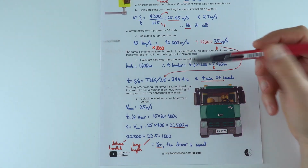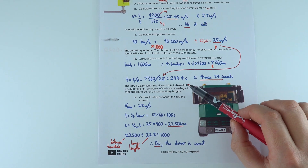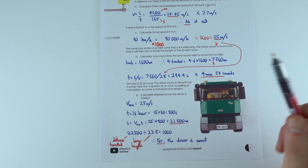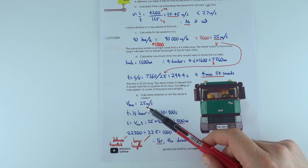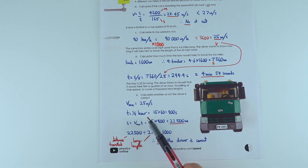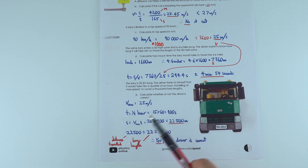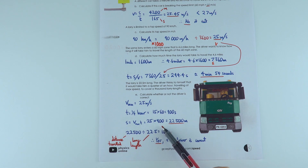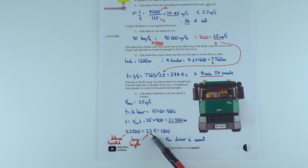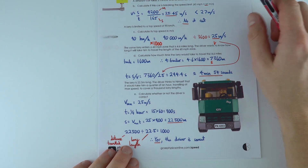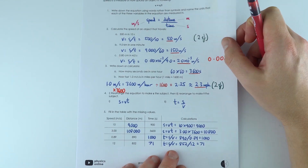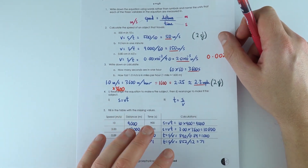The next part asks: is the driver correct? He could go at maximum speed for a quarter of an hour — could he cover 1,000 lengths of the lorry? The maximum speed V_max is 25 metres per second. A quarter of an hour is 15 minutes times 60 seconds, which equals 900 seconds. The distance travelled is 25 times 900, which is 22,500 metres. Checking this against the lorry length, it equals exactly 1,000. So yes, the driver's correct — they would go 1,000 lorry lengths in that time. These are more challenging questions, but they draw on skills you already know from your GCSE maths work.